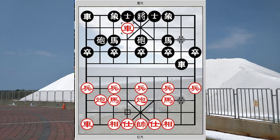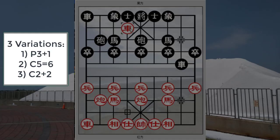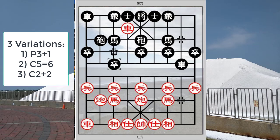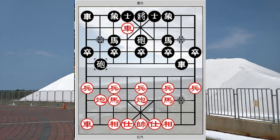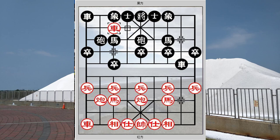As Shang-Chi theory goes, it would not be a good idea to push a solitary piece deep into enemy territory without any backup. Usually red would play P3+1, C8=8 to threaten the black horse, or P3+1, H+2, or R6+5 to attack — these would be the normal moves. Now with R6+7, there were three variations discussed in the book: P3+1, C5=6, and C2+2. Since red had already advanced his chariot deep, black could try to develop his horse.